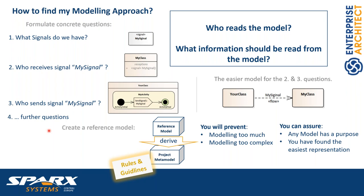With this approach, you will prevent modeling too much or creating overly complex models, and you can ensure that every model has a purpose and you've found the easiest representation. Of course, if you have more questions, maybe this solution is not enough and you may end up with a more complex model. But automations can come into play — you can start with the simpler model and automatically generate the more complex one, or create an information flow automatically when you add a send signal action.